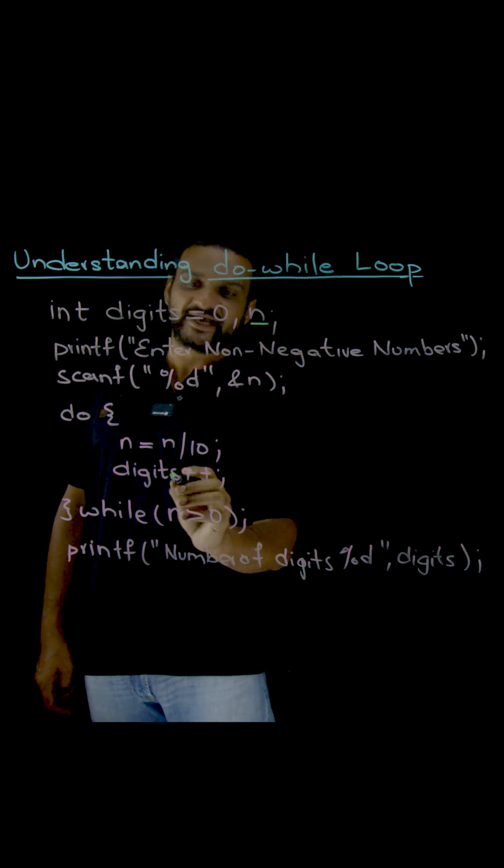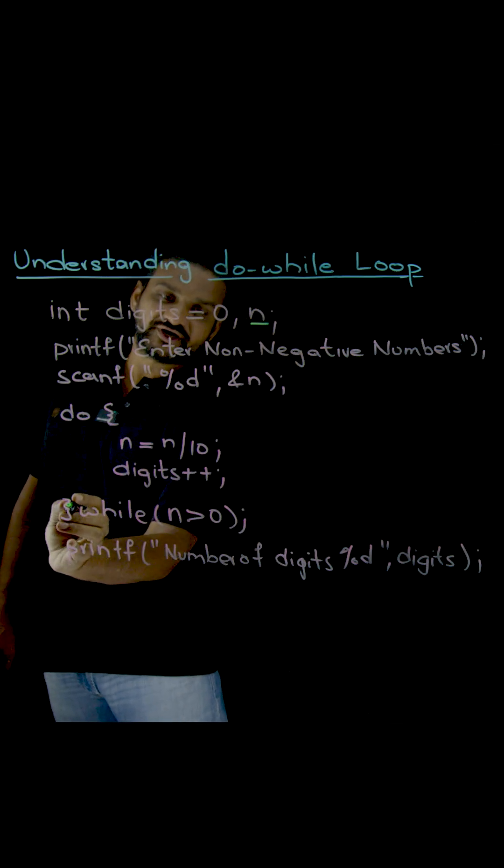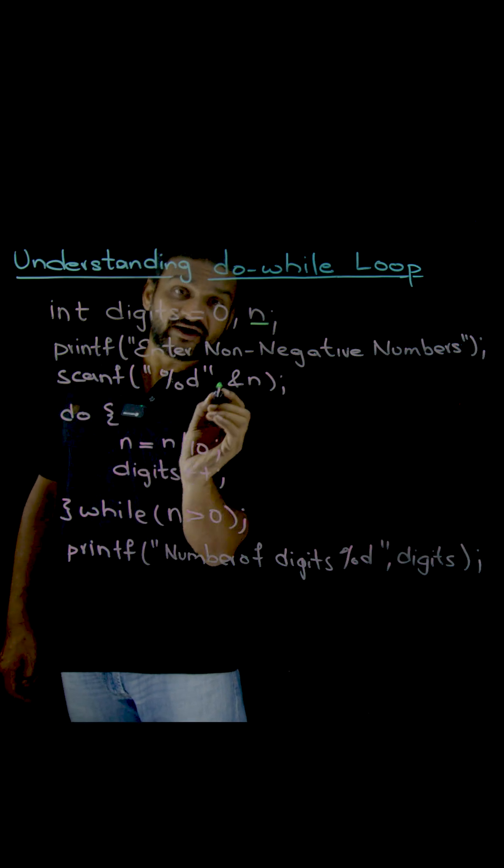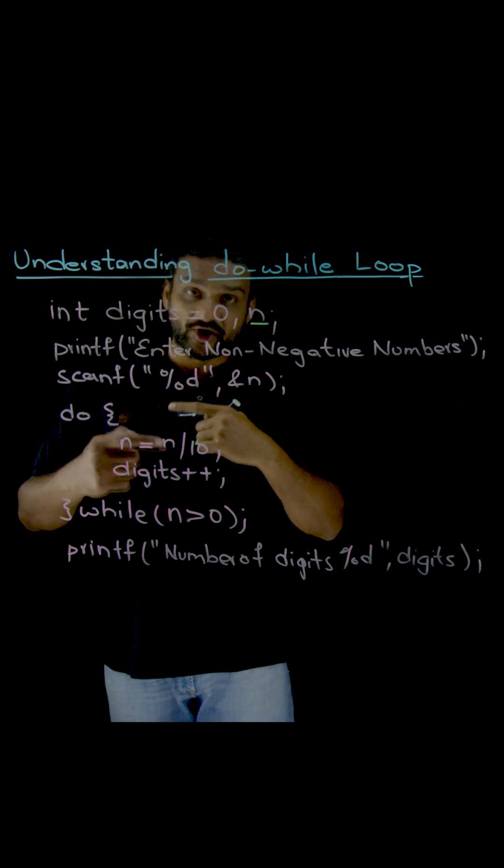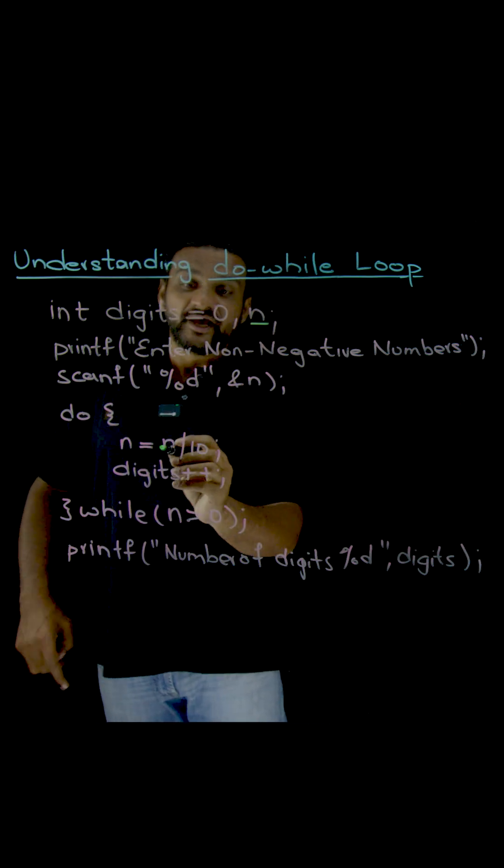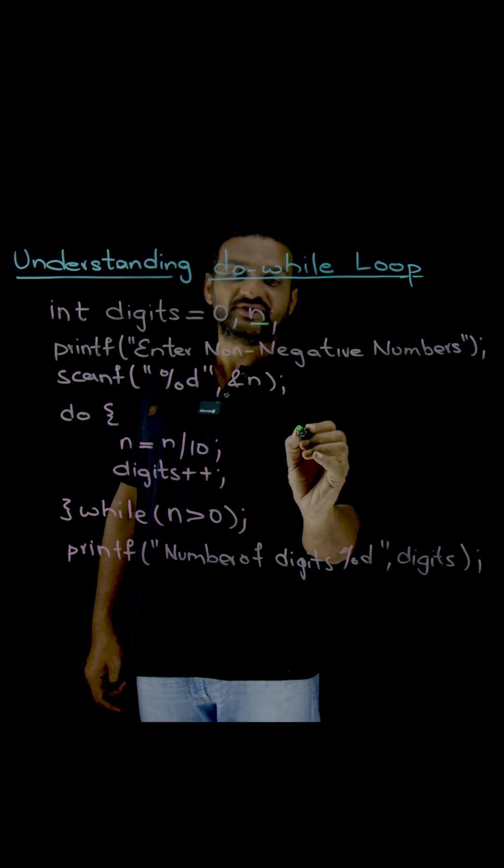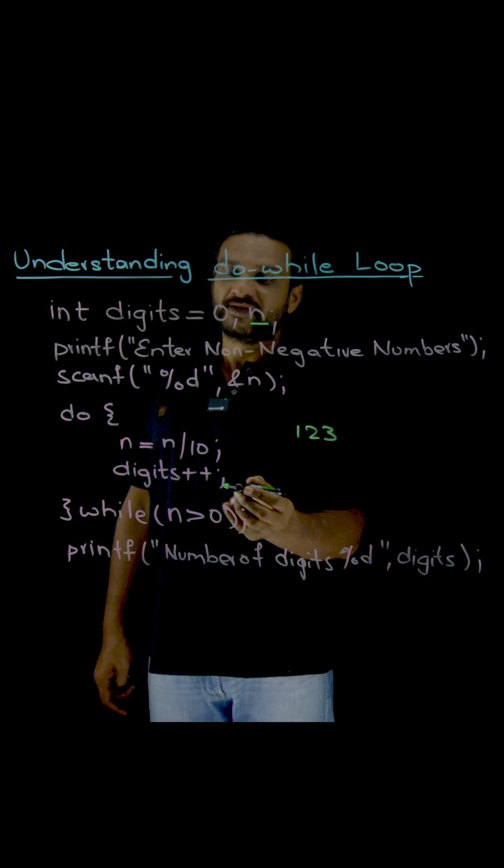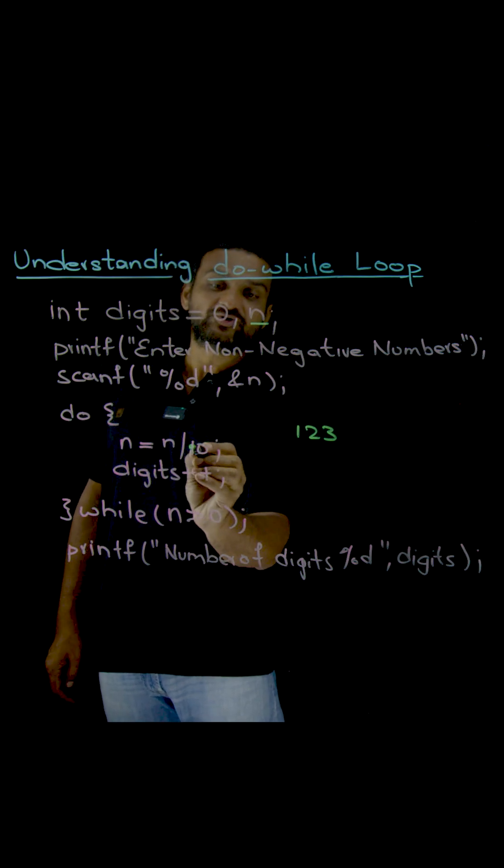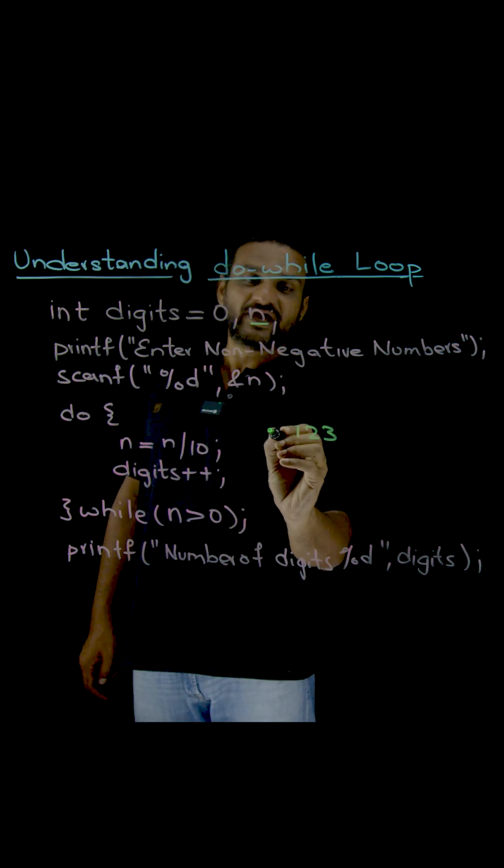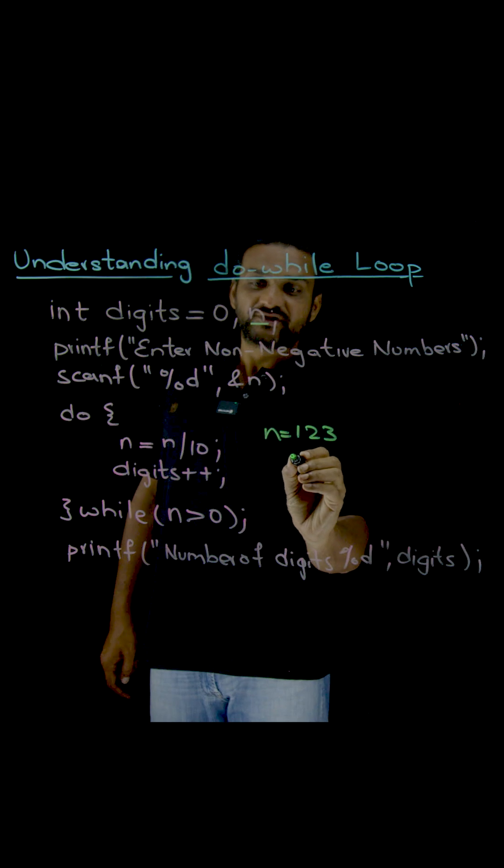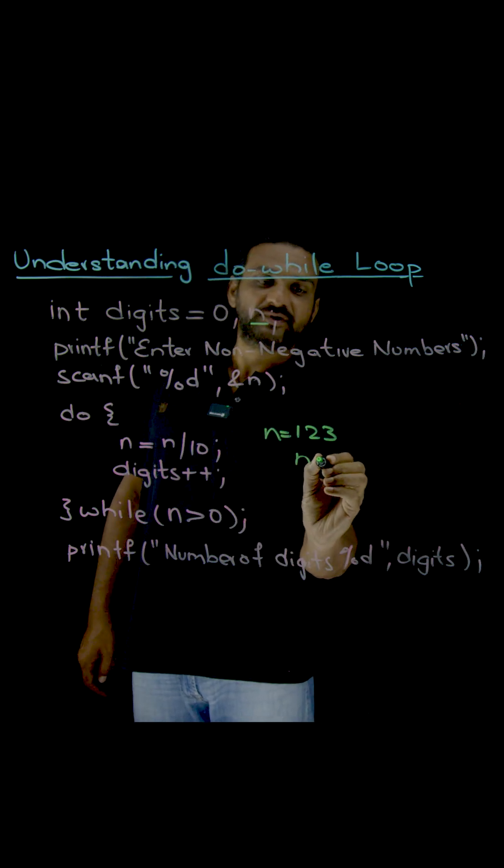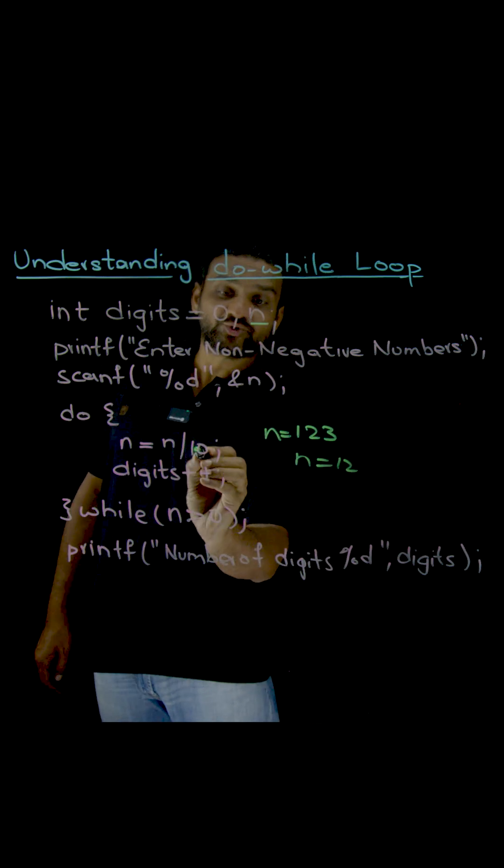Now with scanf we are going to scan, and first what we are going to do is check. We have to check first. We are going to do the body of the loop, it will get executed. Here, let's assume that if he has given 123, now n is equal to 123 divided by 10. Initially the value of n is equal to 123. Now the new value of n will become 12.